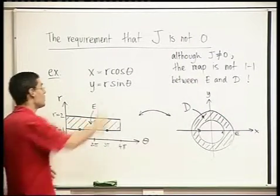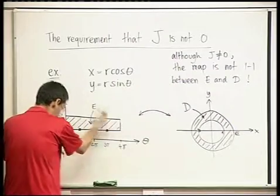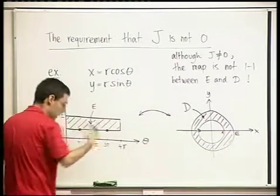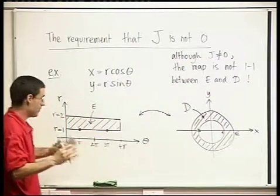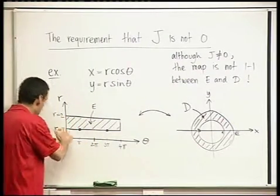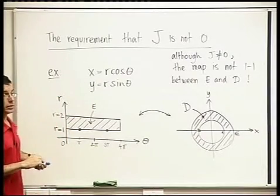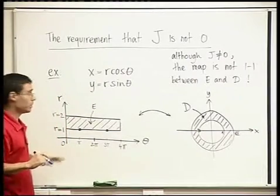J could be zero at the origin — the origin is not included — but even if it were, the theorem would still hold, because it's a single point.